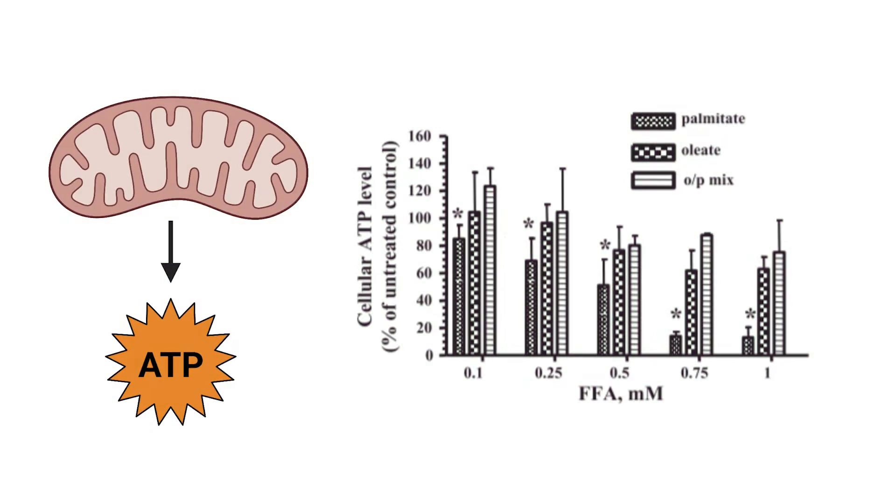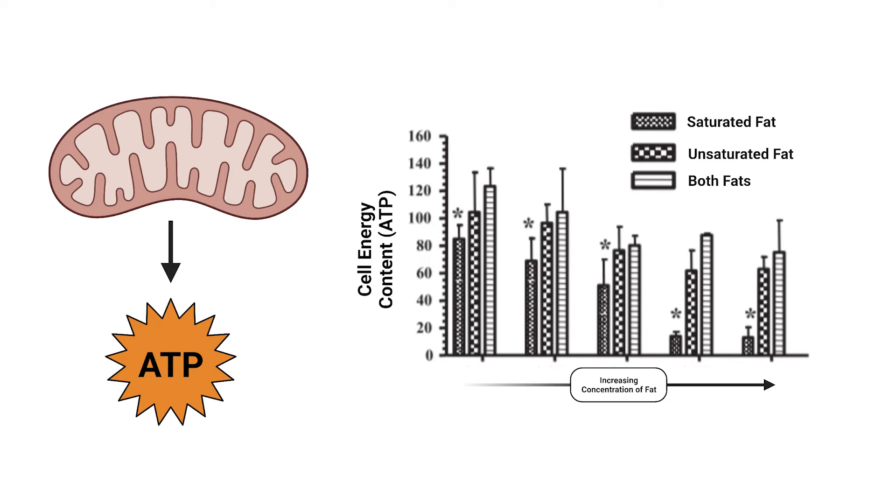Next, the researchers wanted to know the effect on cell energy, which is measured as ATP — adenosine triphosphate — produced from the mitochondria of the cell. Same conditions as the previous experiment: exposure to saturated fat, unsaturated, or both. Here again, we see that the saturated fat palmitate reduced cell energy levels, yet unsaturated fat, or the combination, did not. A drastic reduction in cell energy is not great for the cell, because it means there are fewer ATP molecules available for cell energy processes like keeping the cell alive, let alone muscle contraction, which uses substantial energy.